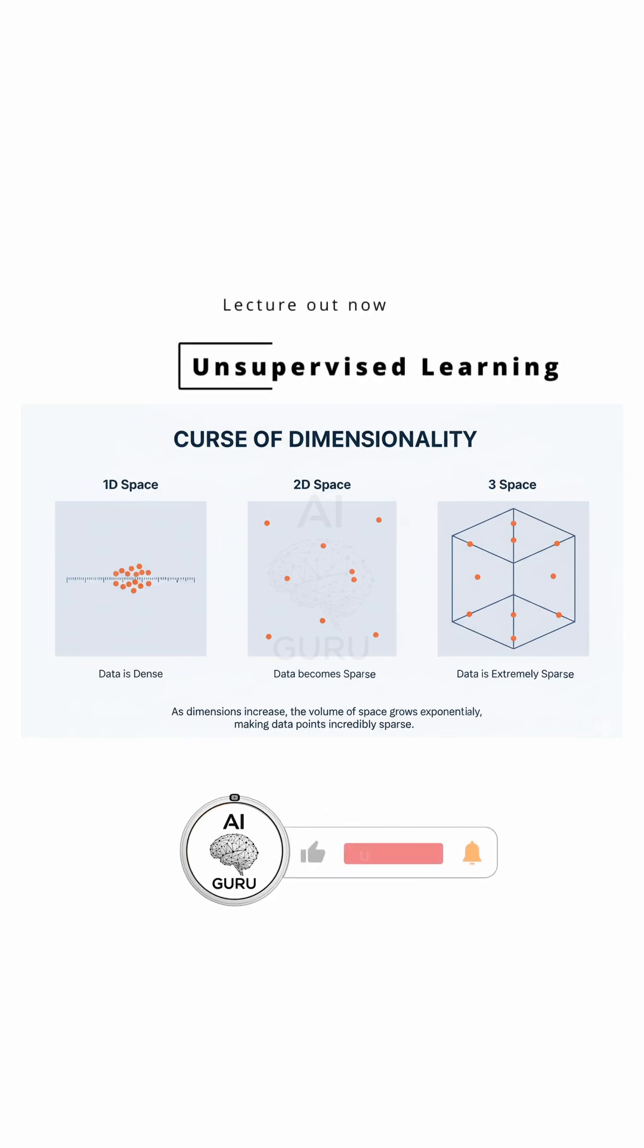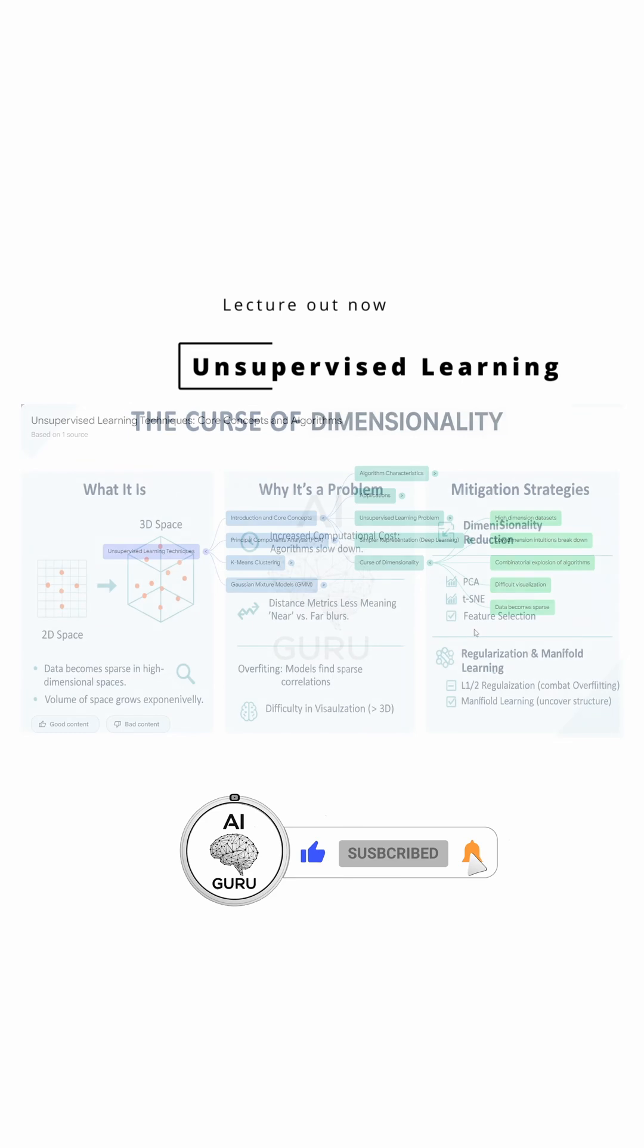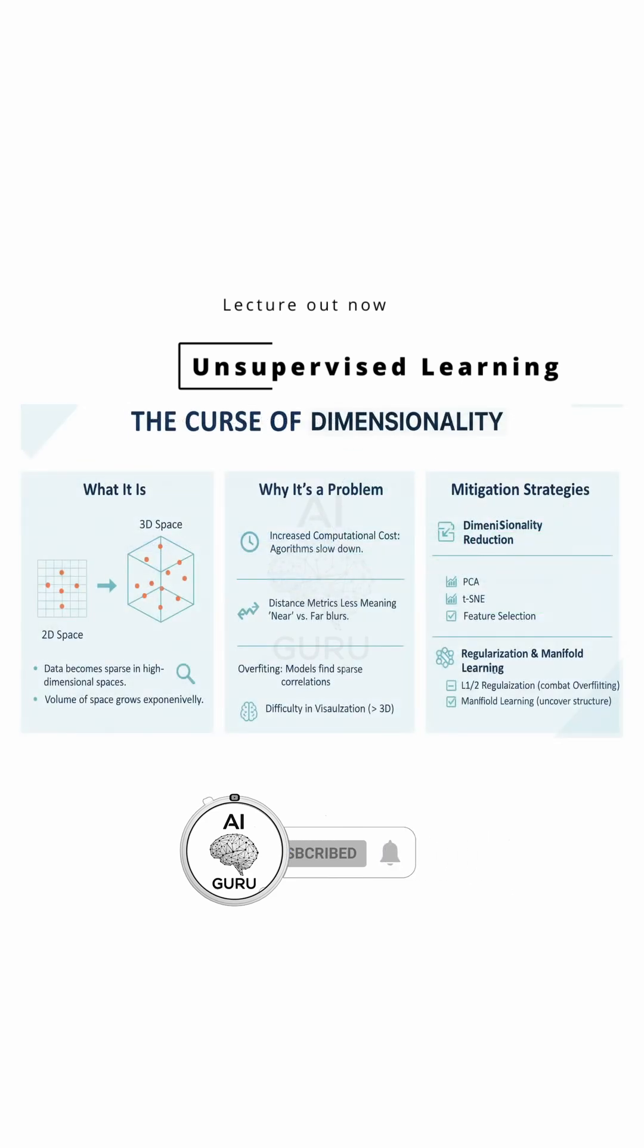But why are data sets with lots of features, these high dimensions, why are they so tricky to manage? It really is a curse, a term coined by mathematician Richard Bellman way back.